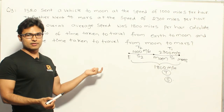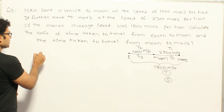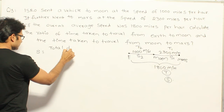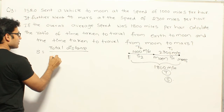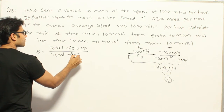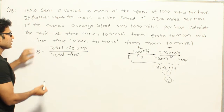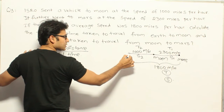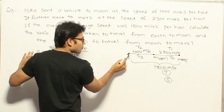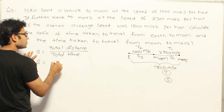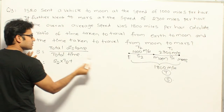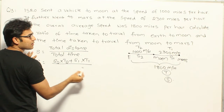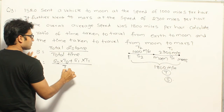How do you generally measure speed? It is distance by time. The total speed is total distance covered divided by total time taken. Total distance is S2 times T2 plus S1 times T1, and the total time is T1 plus T2. So S equals (S2·T2 + S1·T1) divided by (T1 + T2).